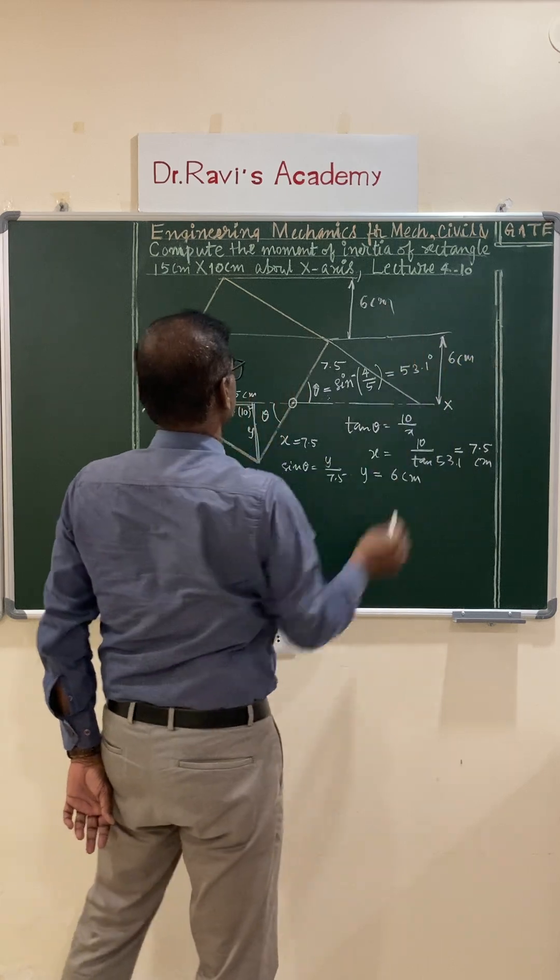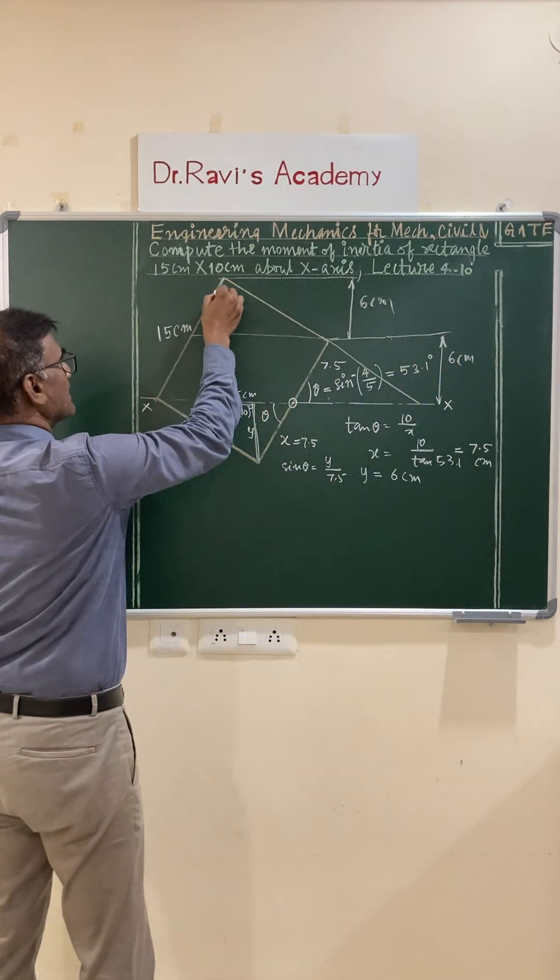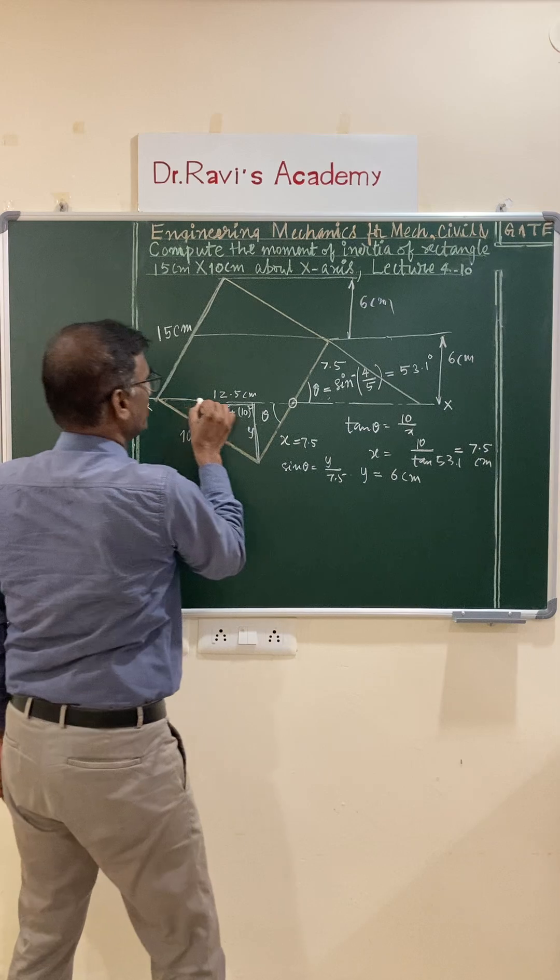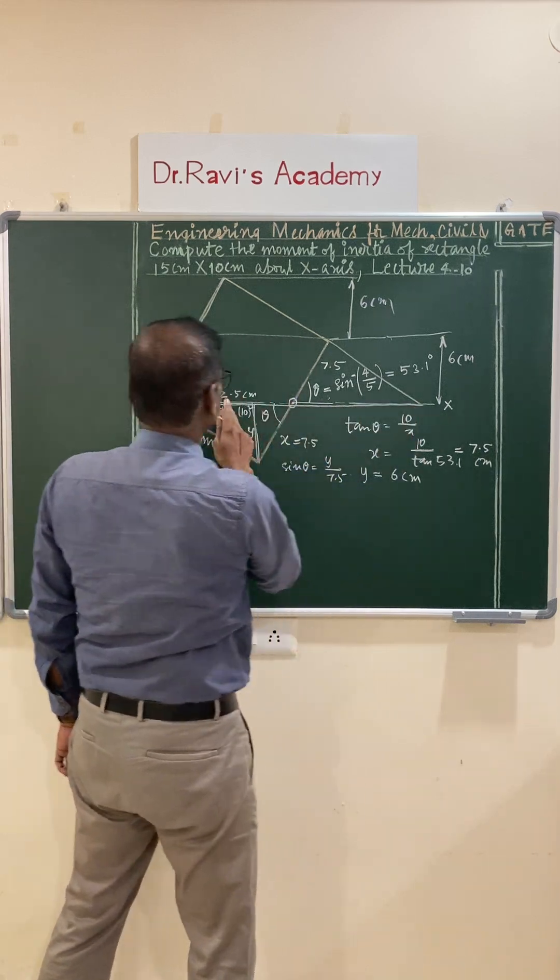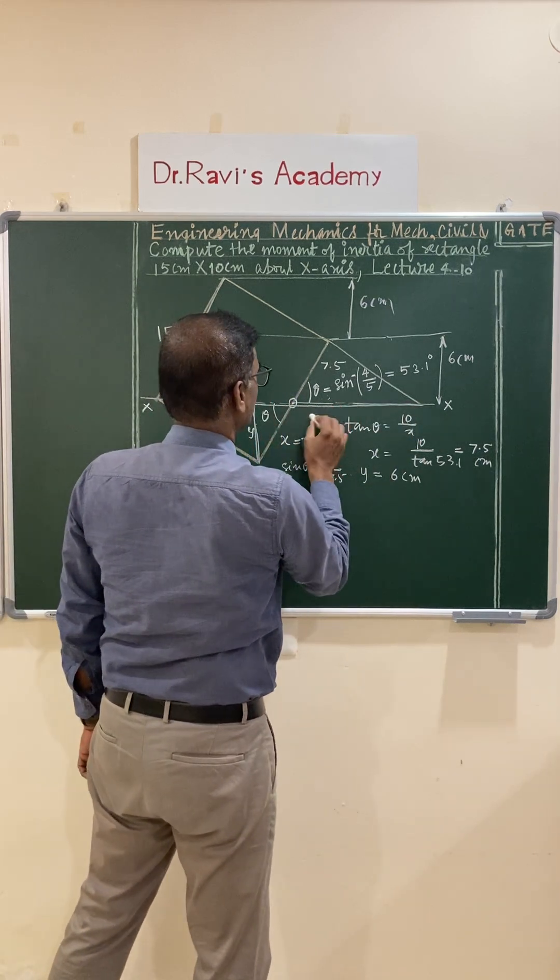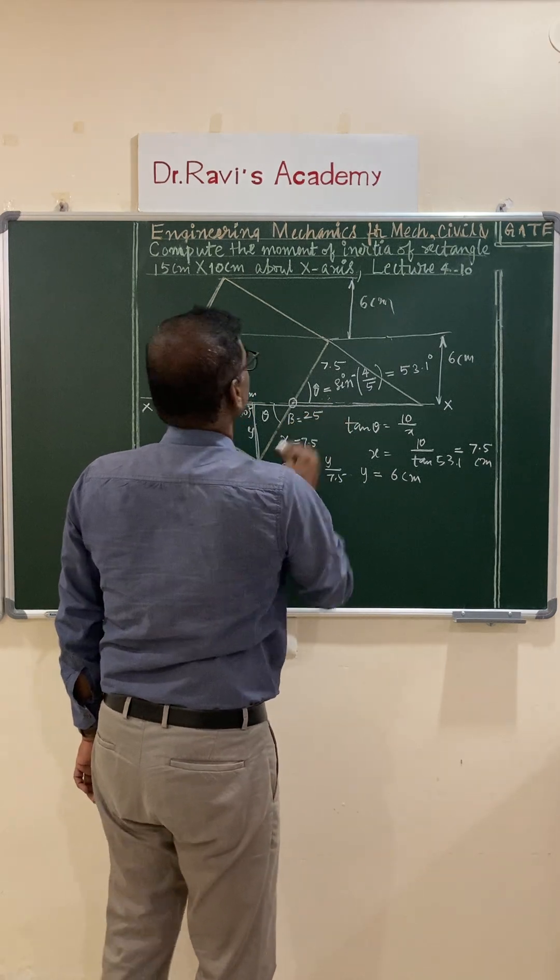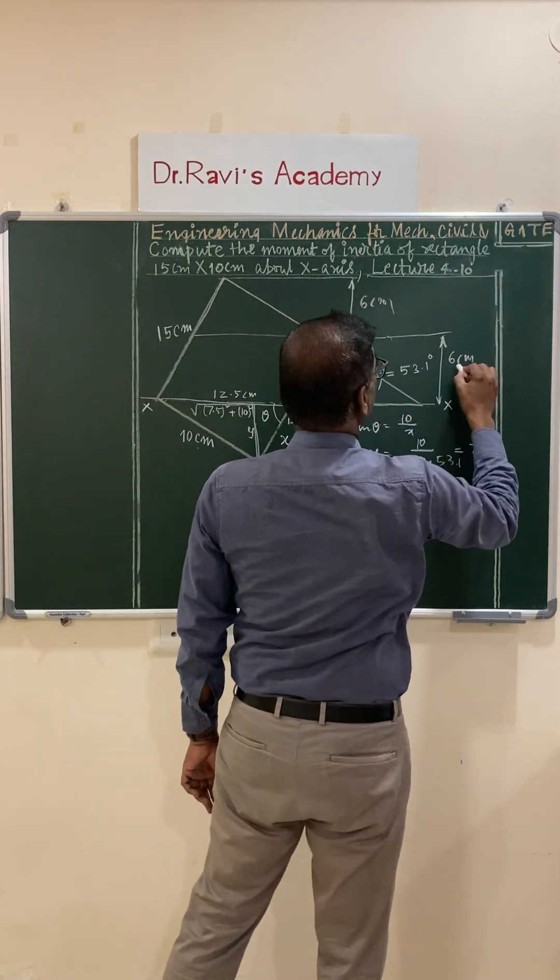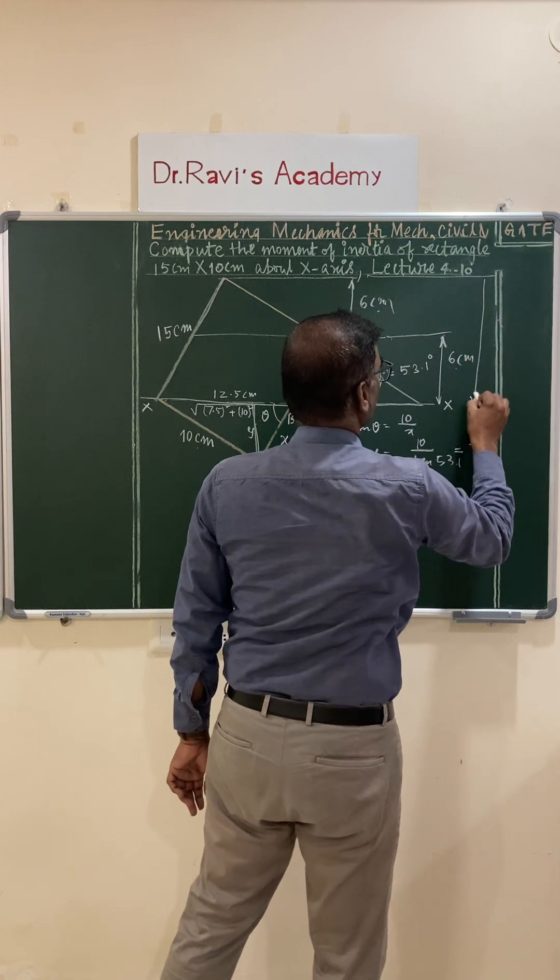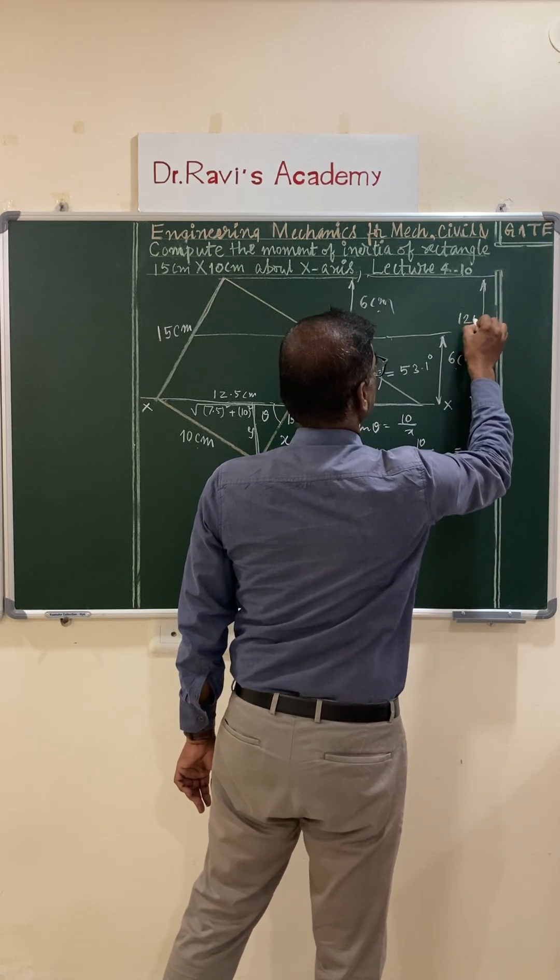So total becomes 12 centimeters. That means you have a triangle with the base as 12.5 plus 12.5, that is 25. Base is 25, capital B is 25. And height of the triangle, 6 plus 6, is 12 centimeters.